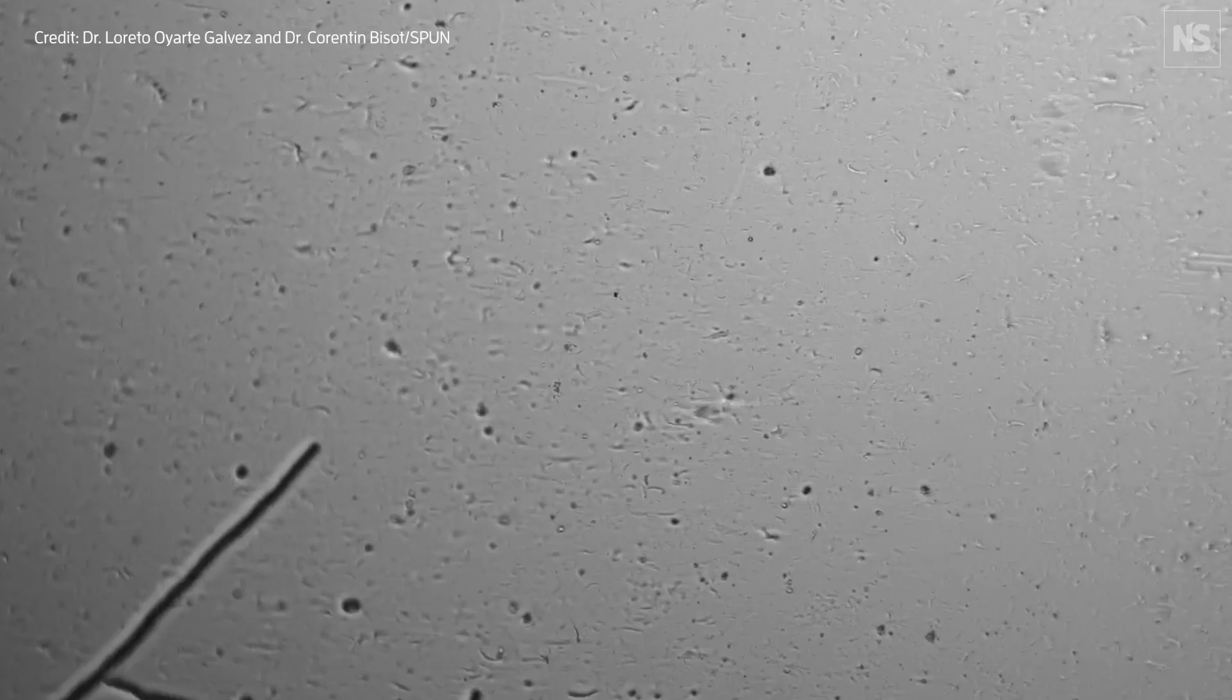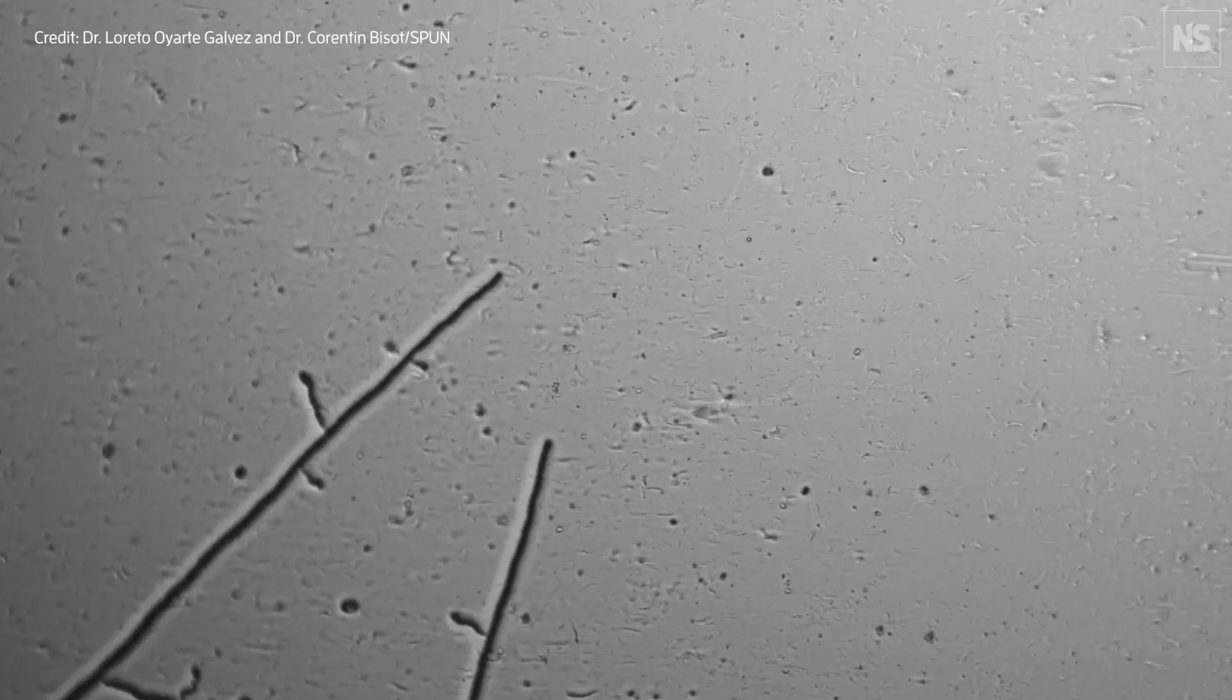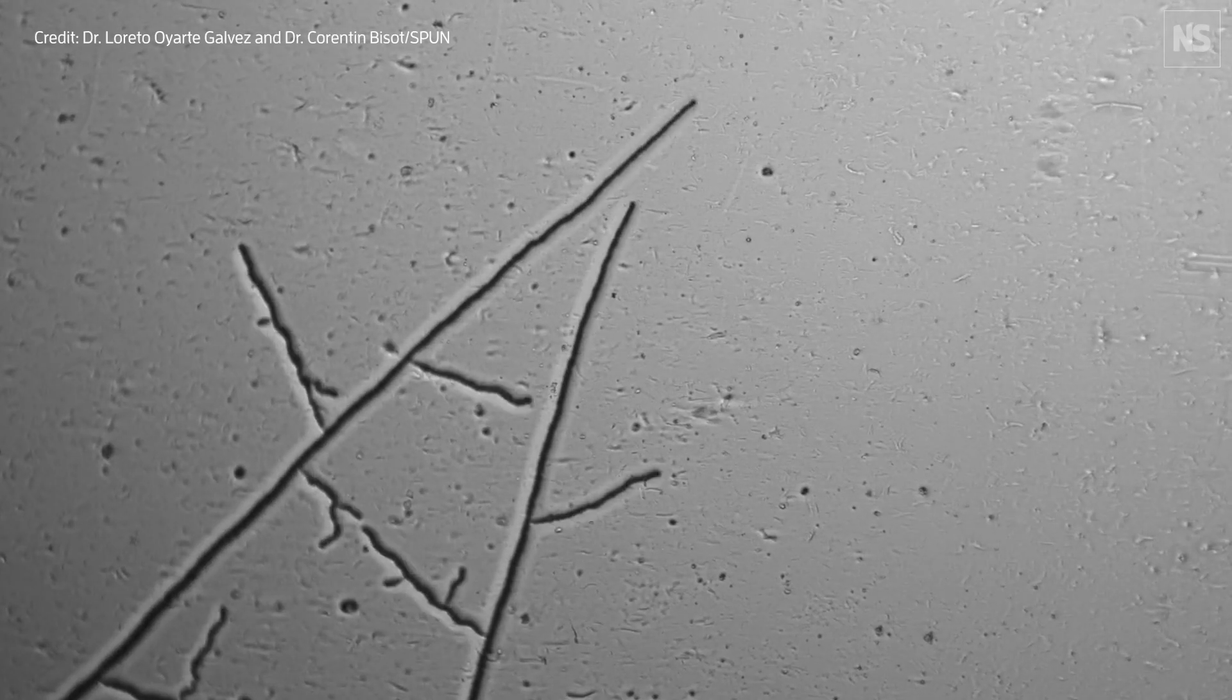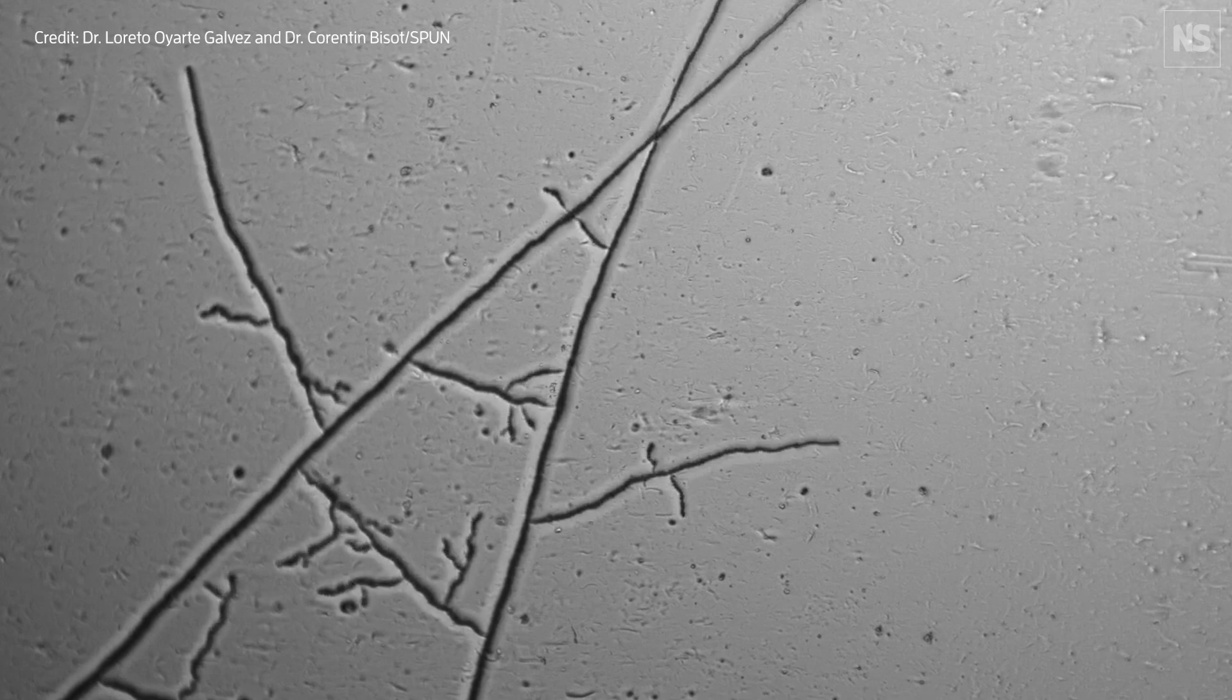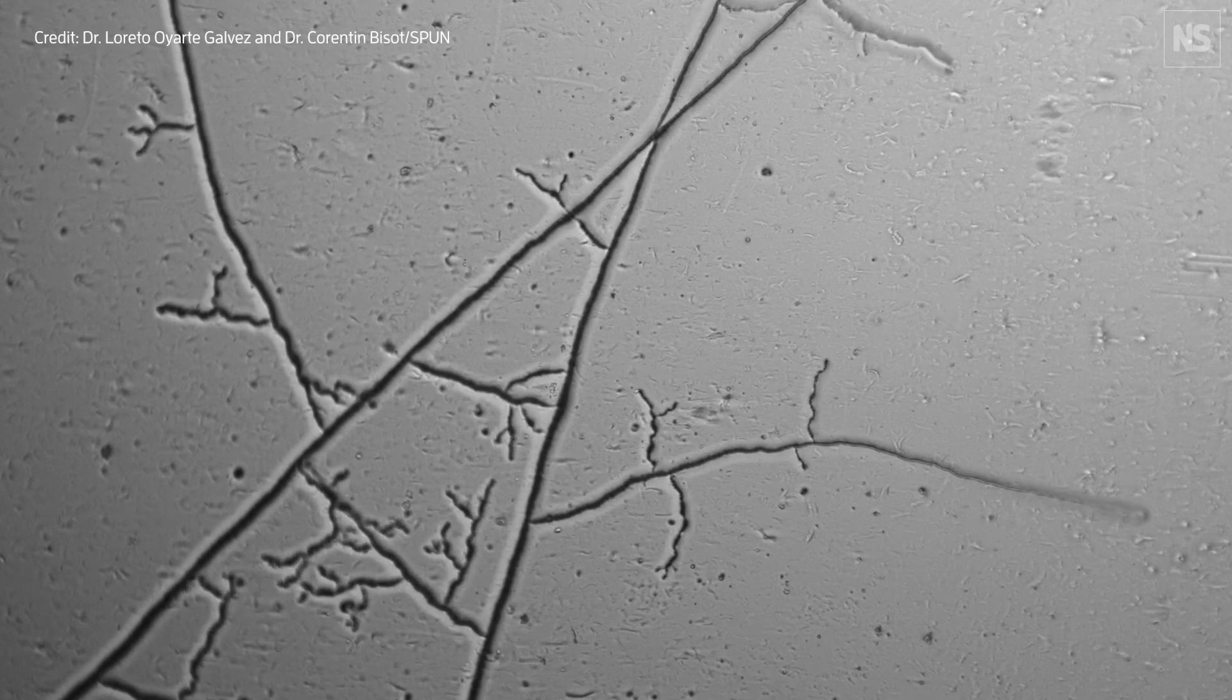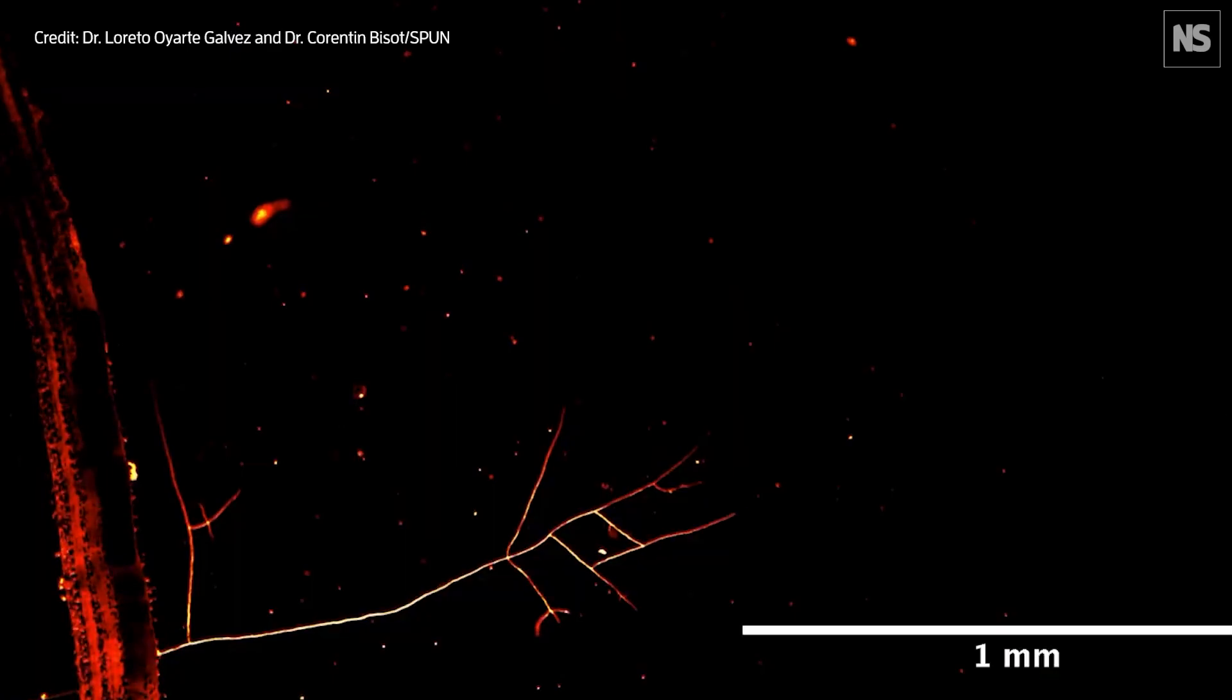So for example when a growing tip encounters another branch of the network they bump into each other and they just fuse. And this turns out to be a very elegant strategy for avoiding overbuilding of their roadways while also balancing the need to extract nutrients in a given area while also exploring new areas.